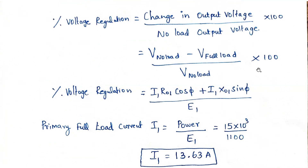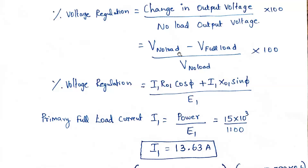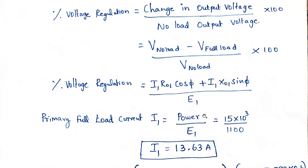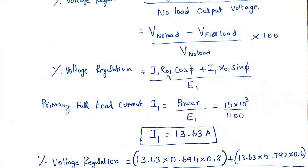Voltage regulation equals no-load voltage minus full-load voltage divided by no-load voltage, into 100. The formula becomes: VR = (I₁R₀₁ cos φ + I₁X₀₁ sin φ) / E₁ × 100. Here we are taking values with respect to the primary side. The same answer will come if taken with respect to secondary as well.